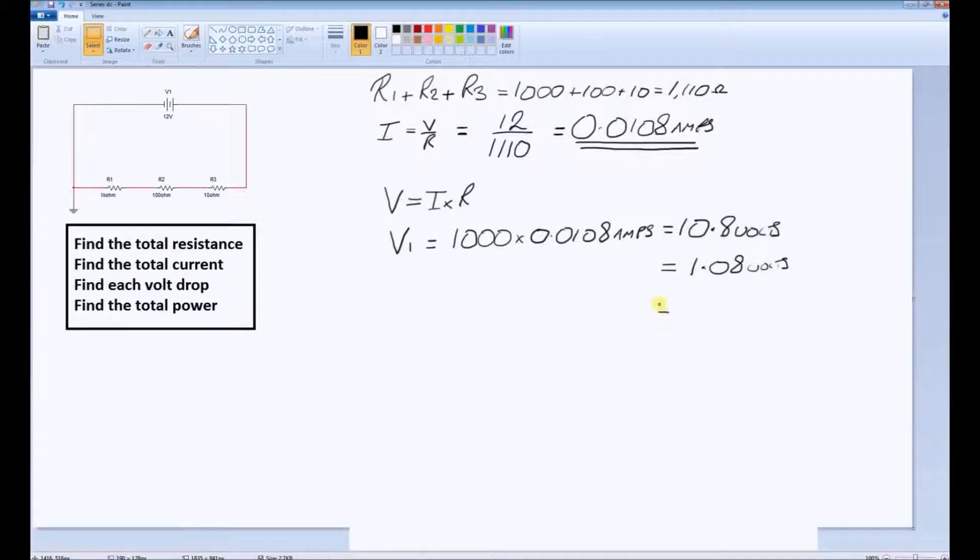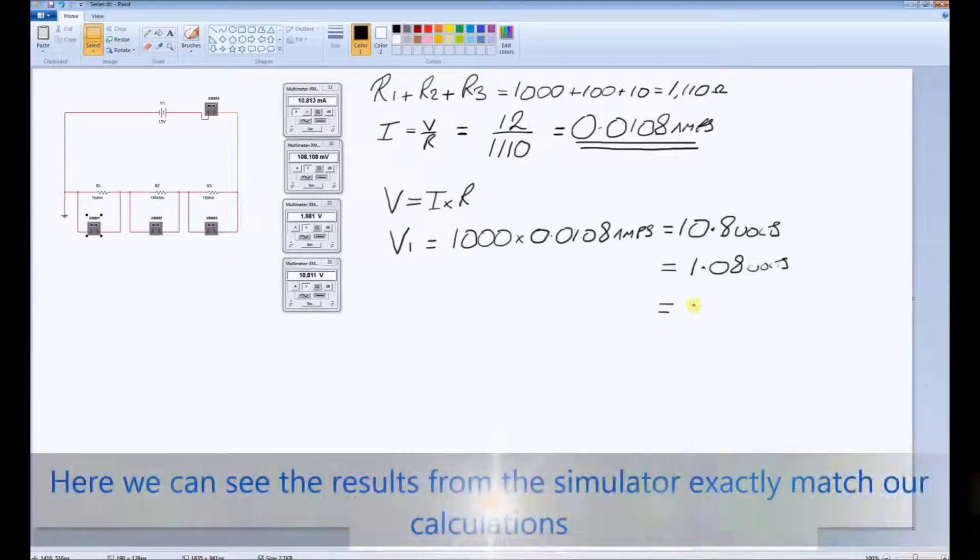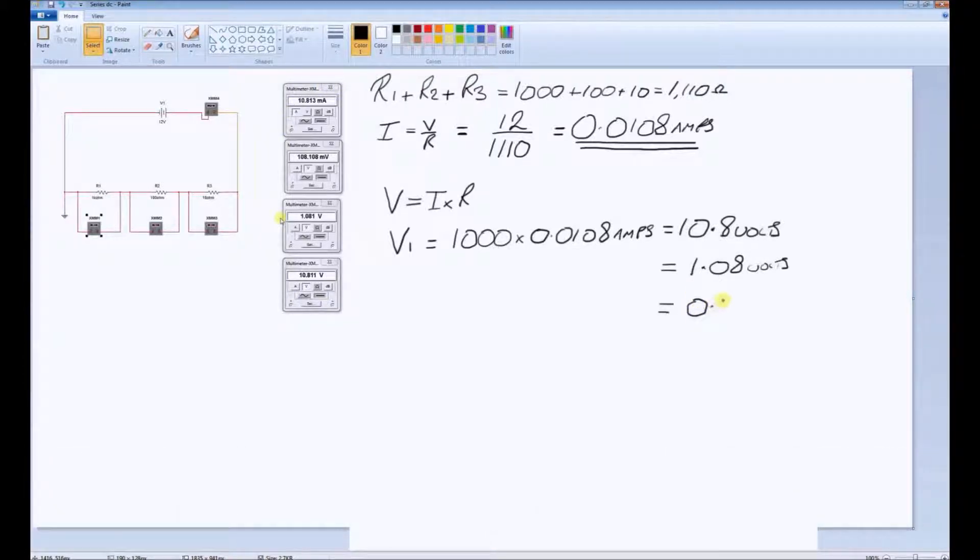And similarly, the volt drop across the 10 ohm resistor will be 10 times smaller again. 0.108 volts.